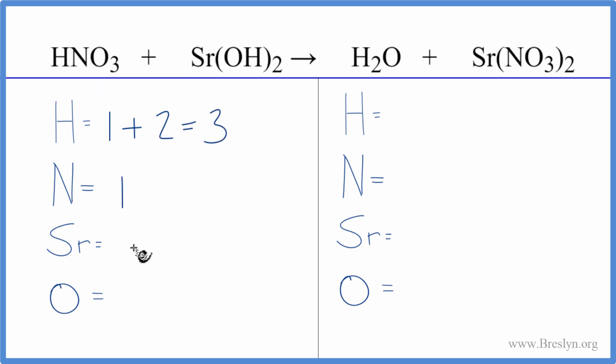One nitrogen, one strontium, and then three oxygens. Plus, we have two times the one, two oxygens. That gives us five total oxygens on the reactant side.